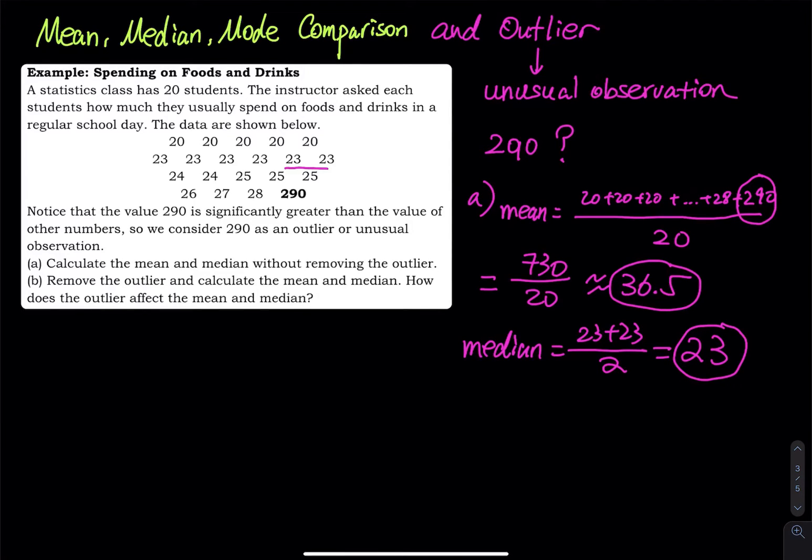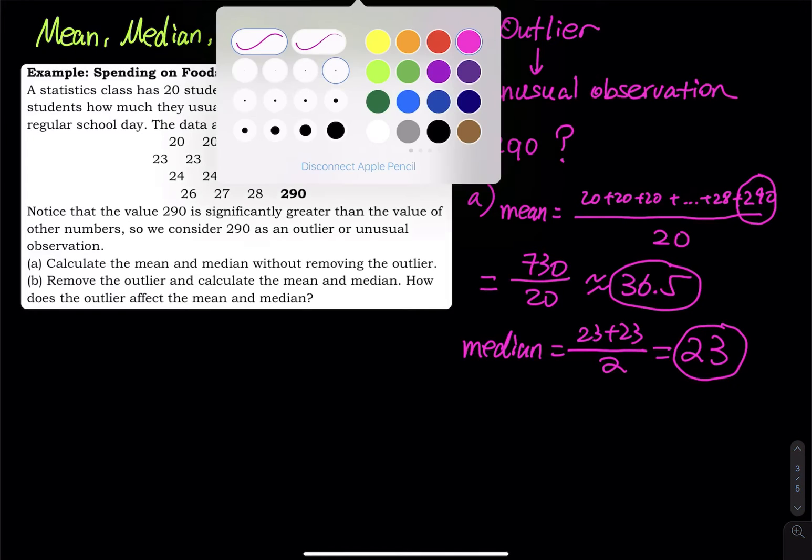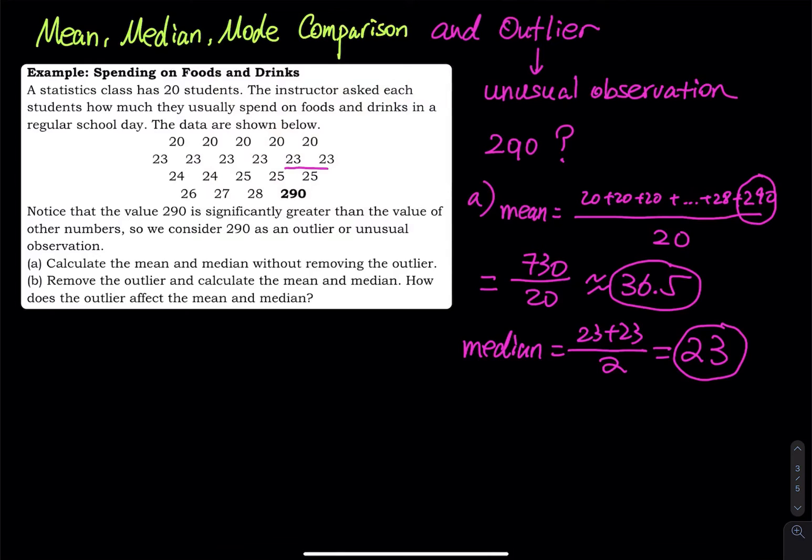So one thing that we observe is when an outlier exists, the median is better than the mean. The median provides a better estimation than the mean. Now let's remove the outlier. I'm gonna switch color first, we remove the 290. So for part B, the mean is now 20 plus 20 plus 20, and then you keep going and then you will reach to 27, 26, 27, 28, but no 290.